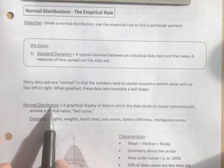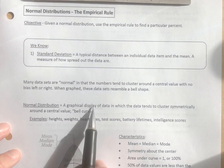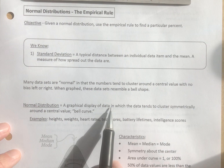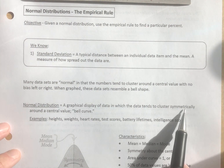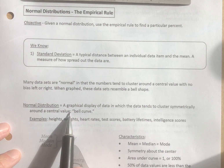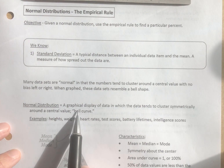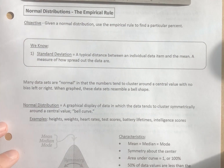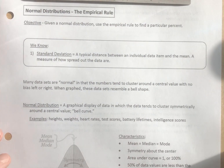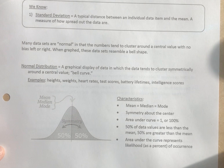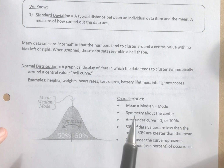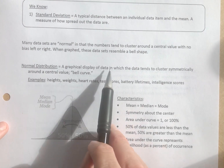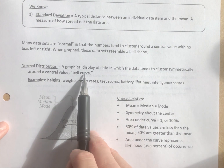Let's define normal distribution. A normal distribution is a graphical display of data in which the data tends to cluster symmetrically around a central value. It looks like a bell curve — this is where the bell curve comes from. So what data sets are normal and therefore have a graphical display that looks like a bell curve?